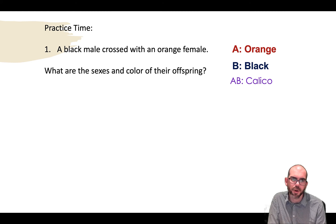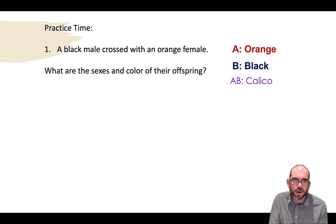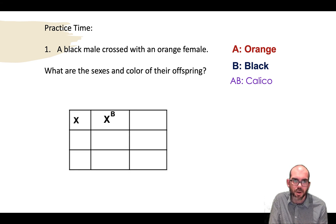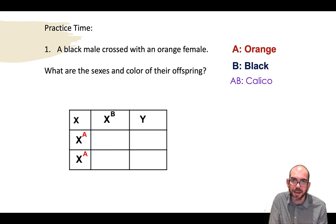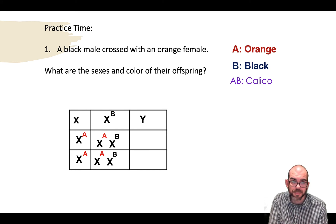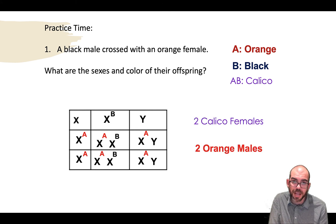Let's try to solve a Punnett square problem. A black male is crossed with an orange female — still talking about cats. What are the sexes and colors of their offspring? For the male, I know it's black, so I'm going to have X superscript B and Y. The Y doesn't carry this gene — it is sex-linked and linked to the X. For the female, she's orange, so I'm going to do X superscript A, X superscript A. In this cross, I have the potential for two calico females and two orange males.